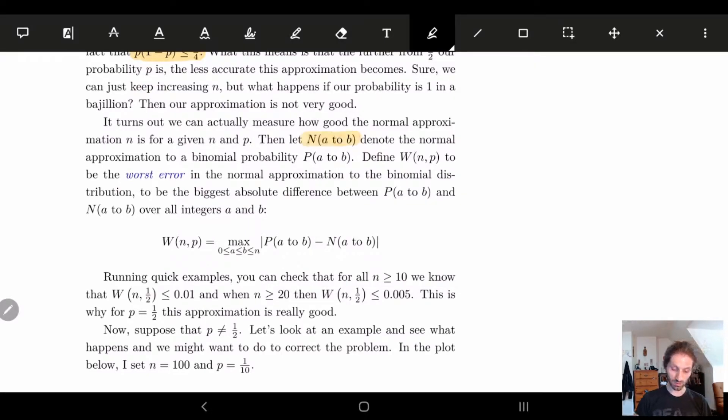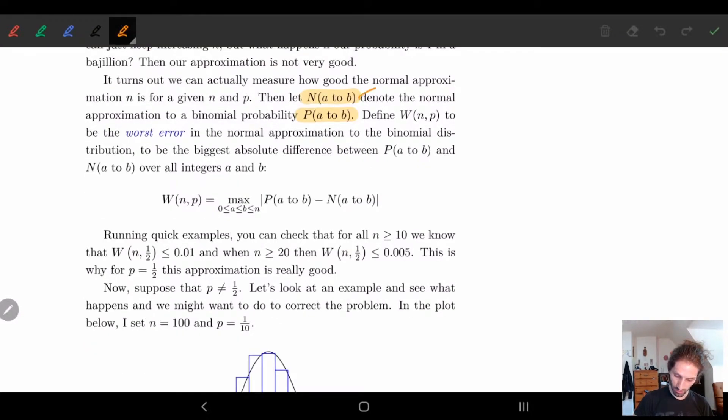So what we're going to do is let N(n,p) denote the normal approximation to the binomial probability P(a to b).